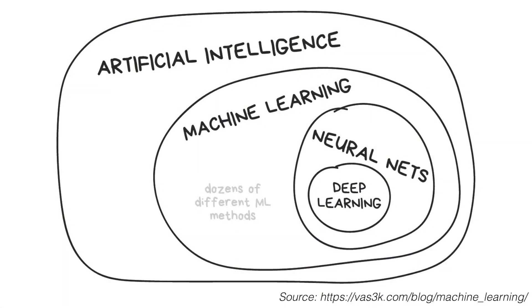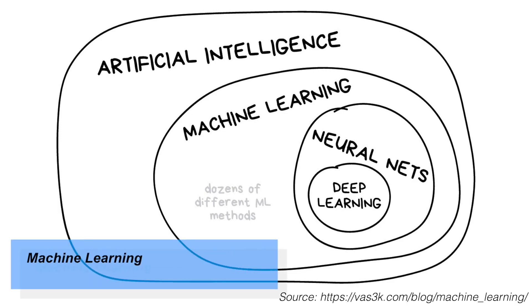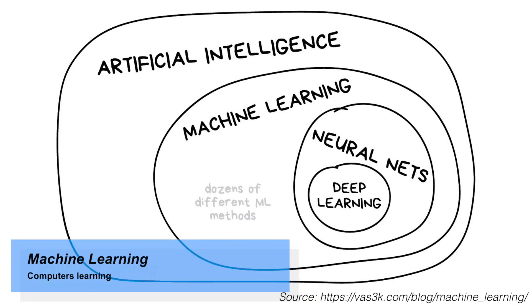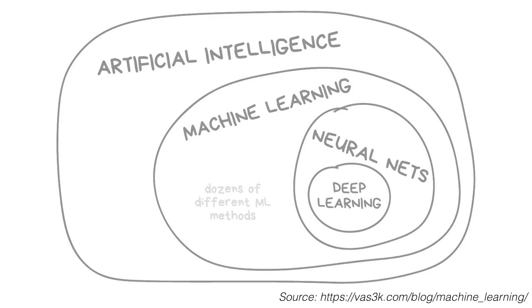I mentioned in an earlier video this diagram here. We have artificial intelligence, which is the performance of tasks that require human intelligence by computers. You have machine learning, which is a whole range of techniques where the defining feature is that the machine learns how to perform those tasks. Within that you have neural networks, and within neural networks you have deep learning — a specific type of technique used to achieve artificial intelligence.